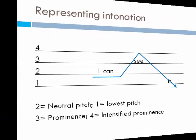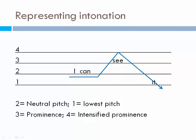Let's look at a representation of intonation. We discussed: one, lowest pitch; two, neutral pitch; three, the prominence — the word getting the biggest emphasis; and four, intensified prominence, generally used in emotional situations because our voice goes louder. Here we have an example of a statement: 'I can see it.' In statements, our intonation goes down at the end — falling intonation.